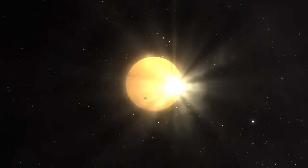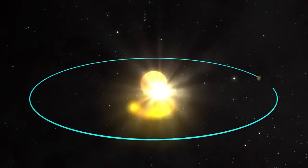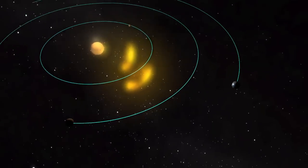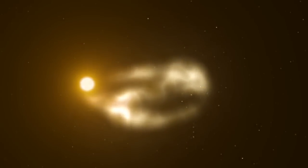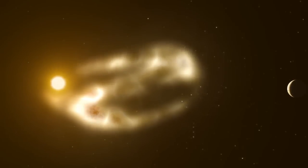A CME is a huge cloud of plasma that bursts out of the Sun's atmosphere and is held together with magnetic fields. An average CME travels at about 1 million miles per hour and weighs around 2 trillion tons.